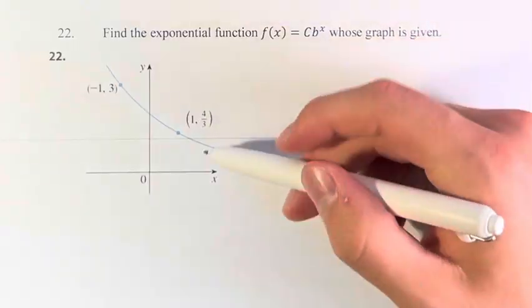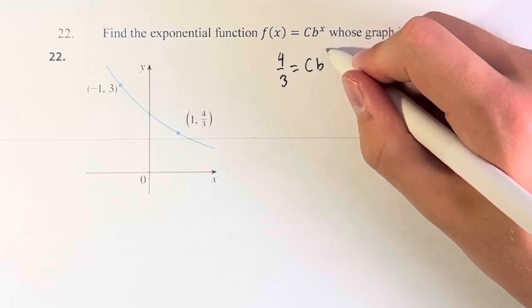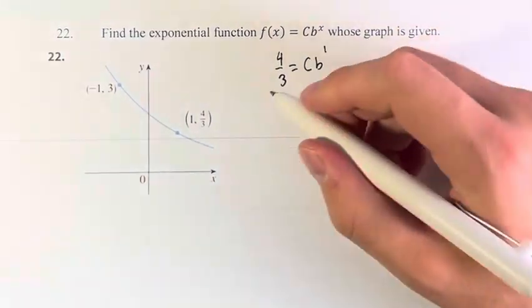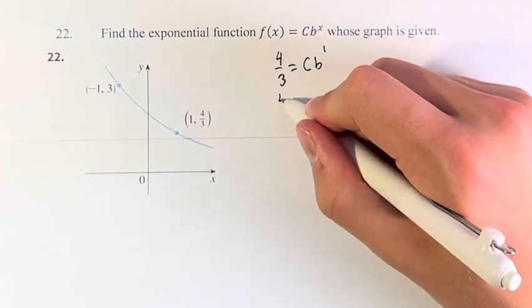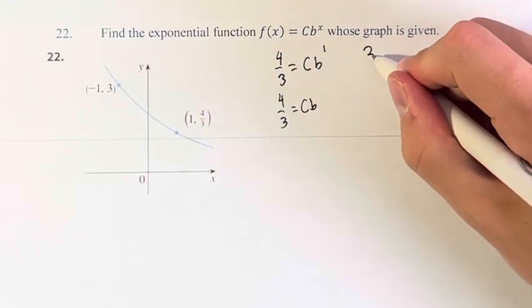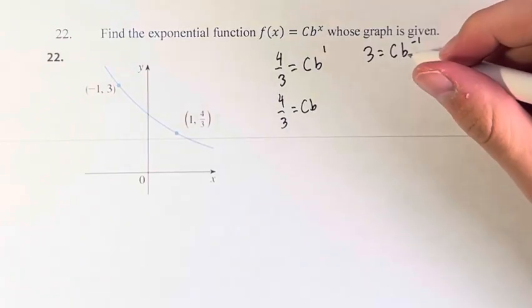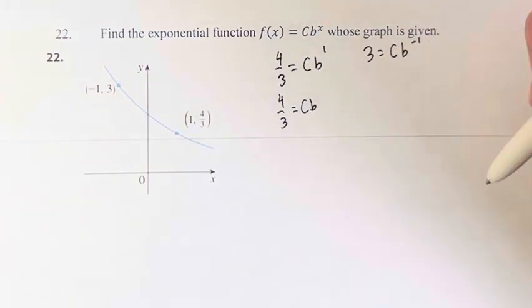So for this point, f(x) equals 4/3 when x is 1. So we can plug both of them in to get that 4/3 = cb. Here, 3 = c times b^(-1), because when x is -1, f(x) is 3.